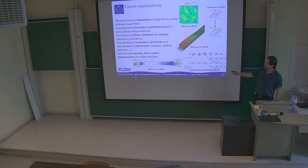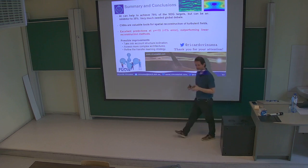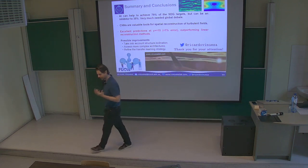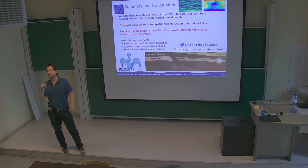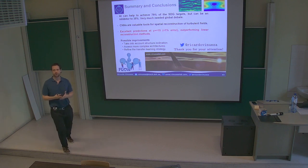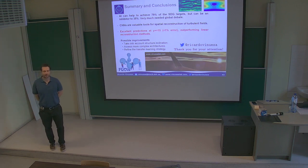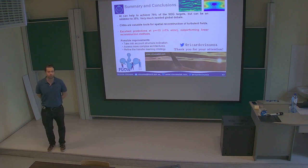These are my conclusions. Takeaway messages: 79% of the SDG targets can be positively affected by AI, but we should never forget the negative effects, which can have quite severe consequences. CNNs, convolutional neural networks, are very helpful for flow reconstructions in urban environments, and this can have a very important effect in the context of sustainable cities. We can get quite high accuracy in these predictions. Thank you very much for your attention—here is my contact information. If you have any questions or want to collaborate, feel free to contact me.